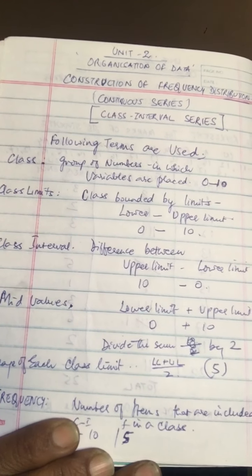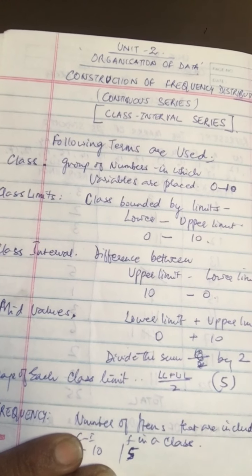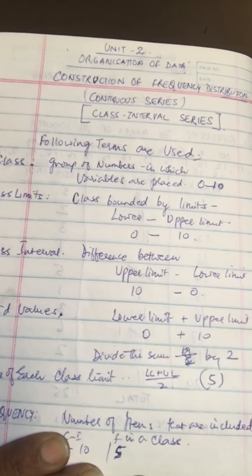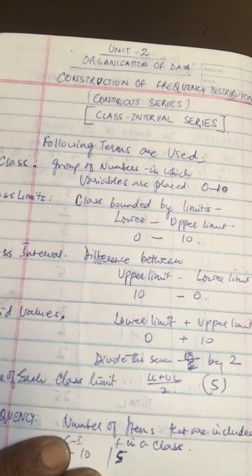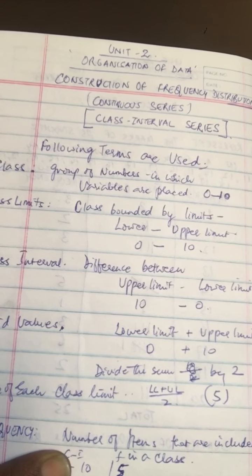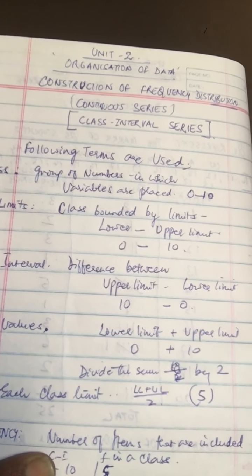The boundaries of the class are called the class limit. So somebody could have got a 0, somebody could have got a 10. So within that, how many students have got marks between 0 to 10 will be in this, grouped into this particular class, which are within this class limits.